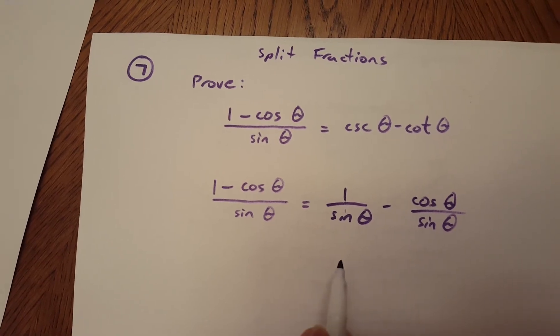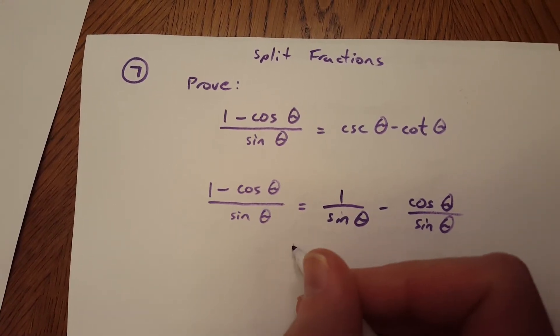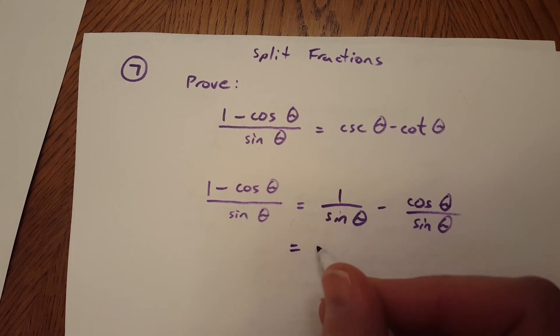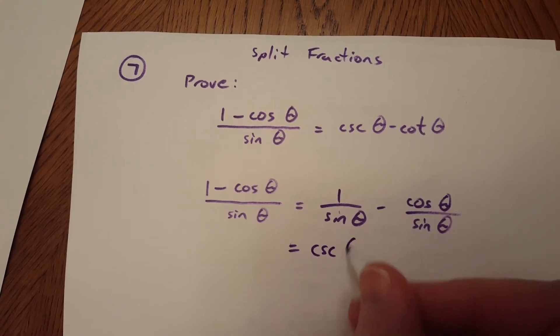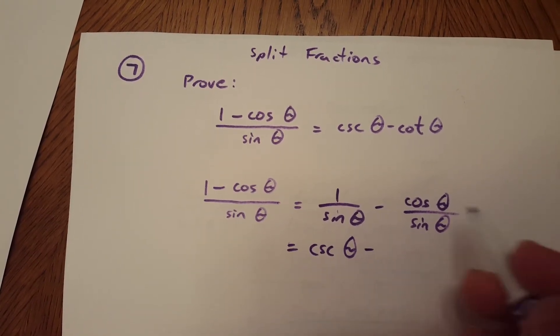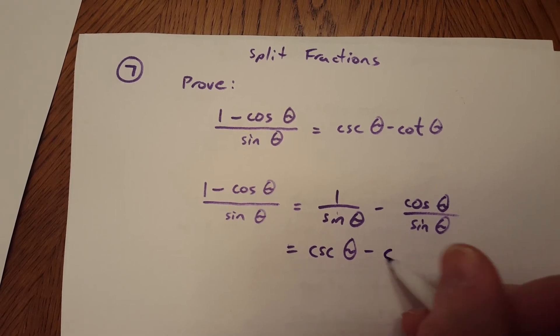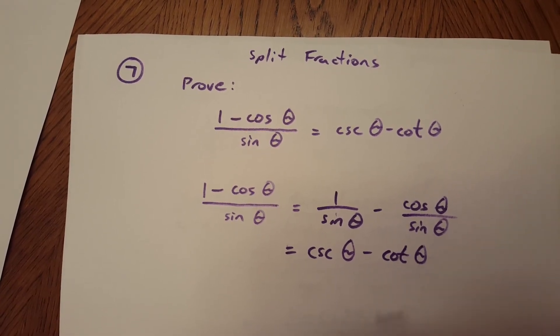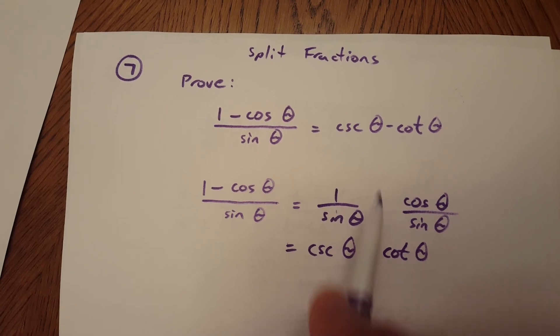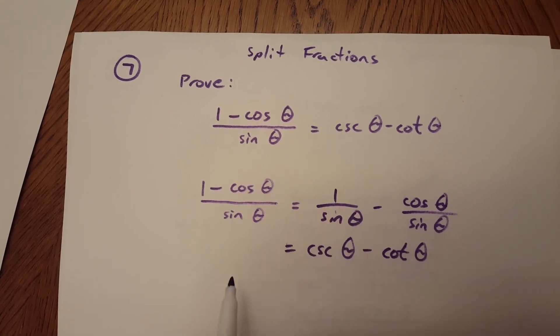Then, once we're at this point, it's really just one more step because 1 over sine is the same thing as cosecant, that's a reciprocal identity, and then cosine over sine is the same thing as cotangent because that is a quotient identity, and this is what we're looking for in the right-hand side.